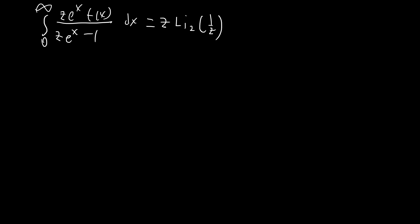And that's where this z comes in. For any of you who know why this z is here, it's a really big hint on how to solve the problem. We need z to be greater than or equal to one, because otherwise the denominator is going to have a zero and it's going to diverge. So that's a restriction on this problem. And that also means that one over z is going to be less than or equal to one, which is going to help us use the series definition for the dilogarithm.